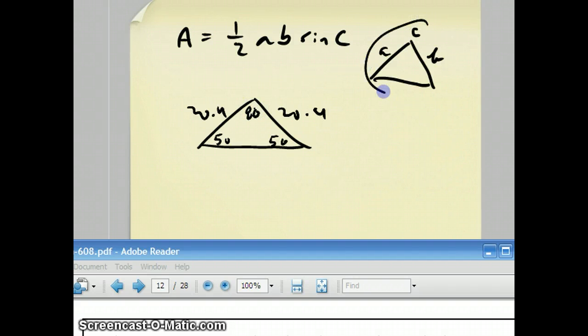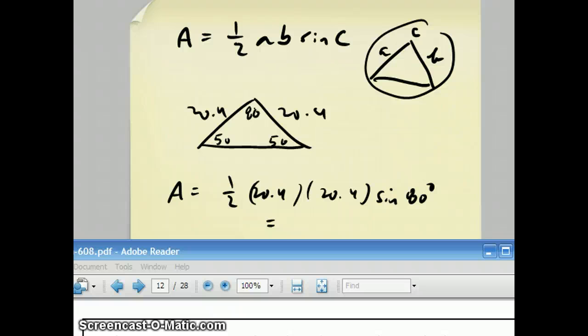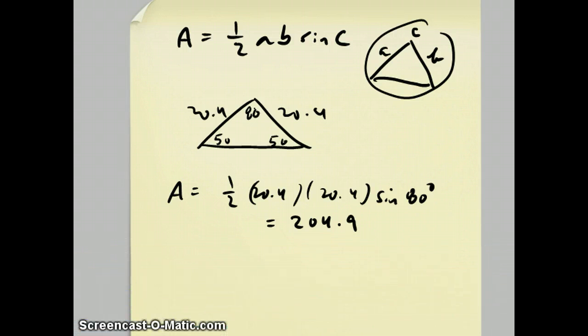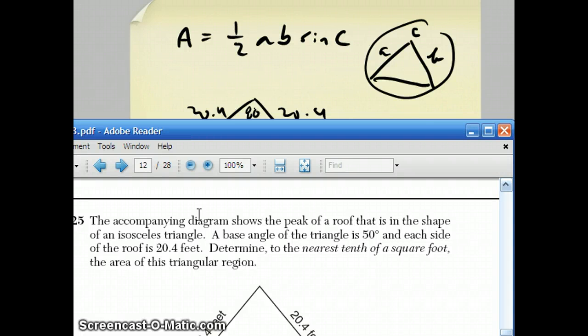So we're dealing with this scenario. Our area is going to be 1 half, 20.4, times 20.4, times sine 80. Make sure that your calculator is in degree mode. And I'm on the side that you can't see, but I'm doing it. 0.5 times 20.4 times 20.4 times sine of 80. And we get our answer, which is 204.9. And they did want it rounded to the nearest tenth of a foot. And if you round wrong, you will lose one point. The whole question is worth only two points. So please look carefully at the rounding to the nearest tenth of a square foot.